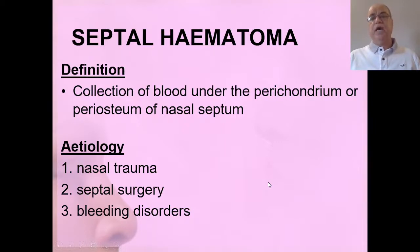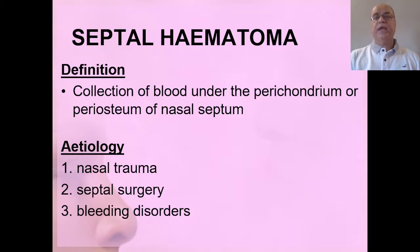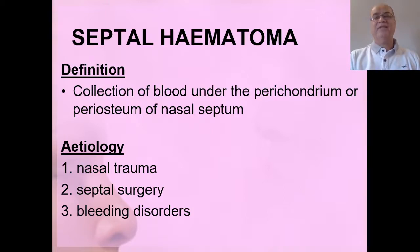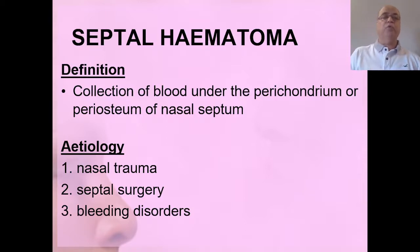Septal hematoma is the collection of blood under the perichondrium or periosteum of the nasal septum. The cartilage is an avascular structure and gets its blood supply from the overlying mucoperichondrium. If that mucoperichondrium is elevated from the cartilage, there can be ischemia of the cartilage, and blood becomes collected between the overlying mucoperichondrium or mucoperiosteum and the underlying cartilage or bone.